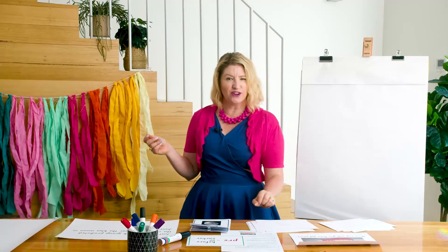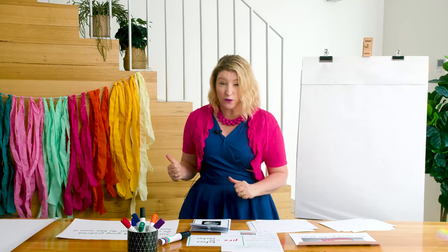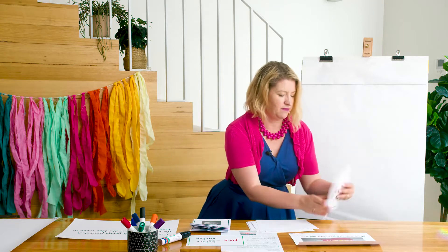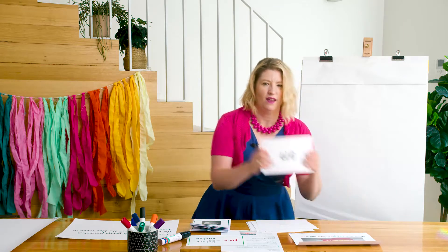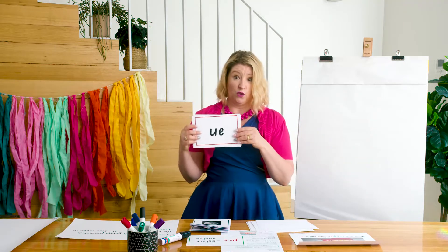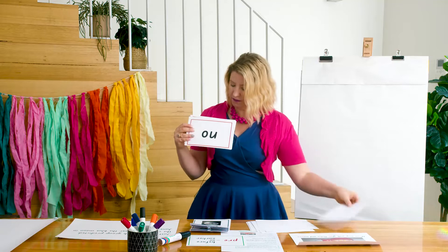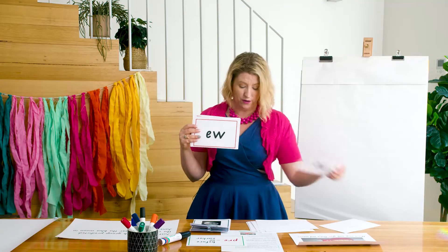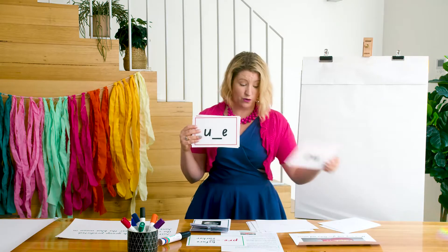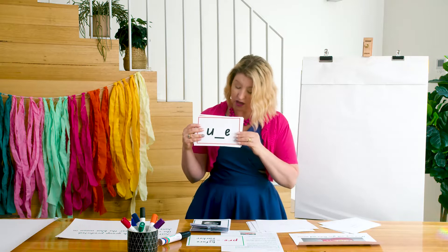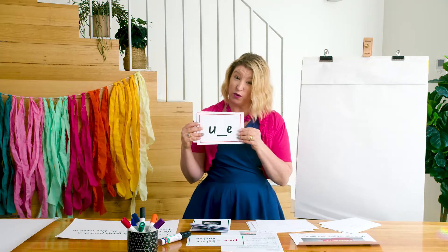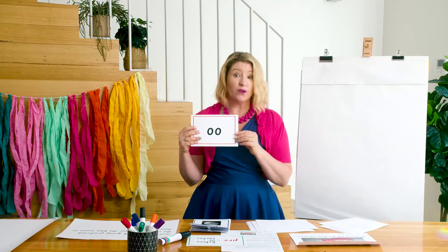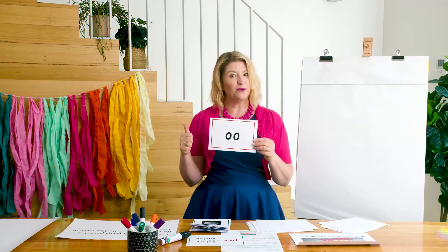How did you go? Did we get all the OO sounds? Let's have a quick look and see. UE — OO. O, U — OO. EW — OO. UE — OO. Double O — OO. We got them all. Good job.